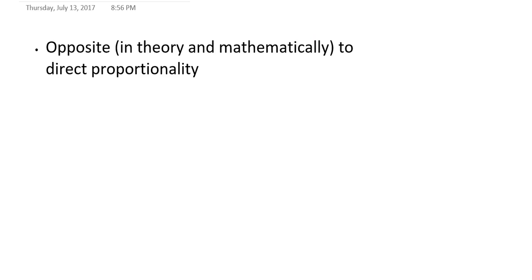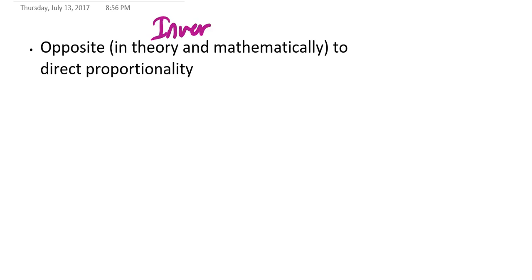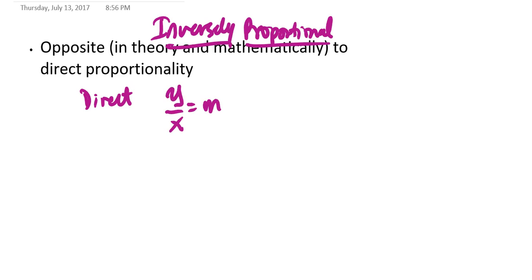However, it's not always true that data could be directly proportional. Sometimes data is what we call inversely proportional. Now, inverse proportionality is actually pretty much the same as having the opposite of direct proportionality. Now, if you remember, for direct proportionality, based on the previous slide, if I divide those two variables by each other, I get a constant. Right?